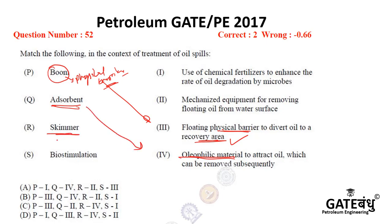A skimmer is equipment used in a water treatment plant when water is produced with oil. Since oil is lighter than water, during treatment the oil comes up and floats on the water surface. A skimmer is a mechanical equipment for collecting and removing floating oil from the surface of the water.